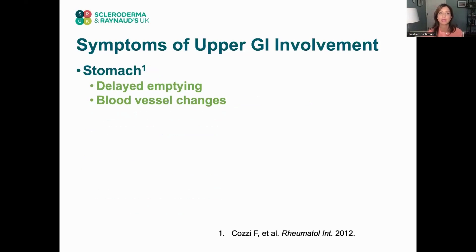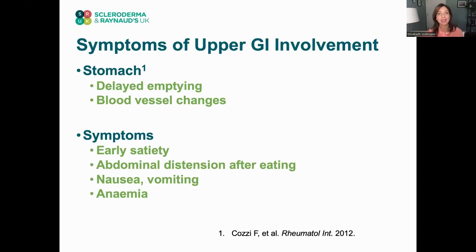When the stomach is involved, we can see delayed emptying — meaning the contents of the stomach don't move out fast enough and you stay full longer. We also see blood vessel changes in the stomach, which can be a big problem when patients develop something called the watermelon stomach: a lot of enlarged blood vessels that can cause bleeding. Symptoms include early satiety, abdominal distension after eating, and nausea and vomiting in severe cases. With the watermelon stomach, patients are at risk for anemia from blood and iron loss.